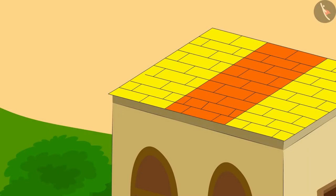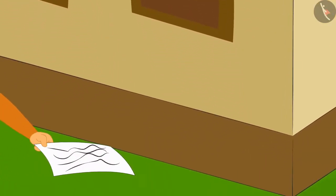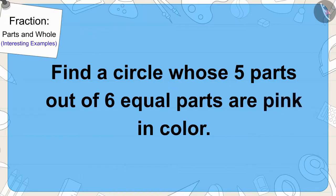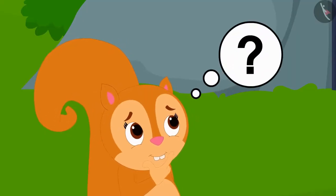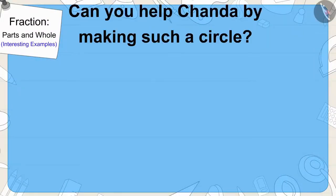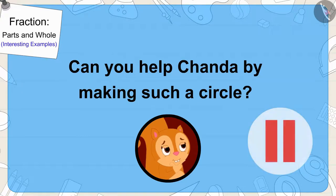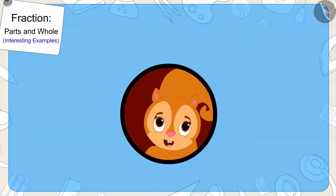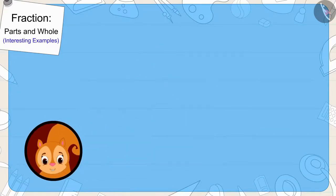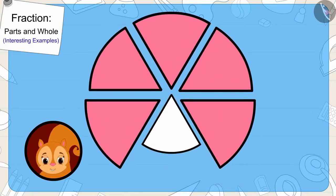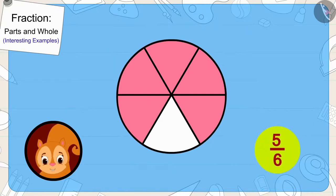Now Chanda found her last clue near Golu's house. It was written in that clue that she has to find a circle whose five parts out of six equal parts are pink in color. Chanda does not know what this circle will look like. Can you help Chanda by making such a circle? You can find the answer by stopping the video. Well done, children! You have made it perfectly. There are six equal parts here and five of them are pink. We can write it as a fraction in this way.